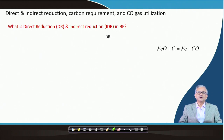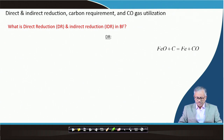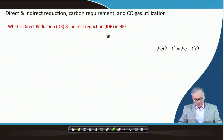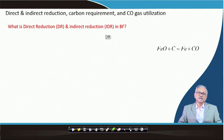Why is it called direct reduction? Here, carbon is directly reacting with FeO. FeO is a solid and carbon is a solid. However, solid-solid reaction does not continue for a long time — as soon as contact between the two solid particles diminishes, the reaction stops. So although it looks like a solid-solid reaction, it actually takes place by gaseous intermediates like CO and CO₂.